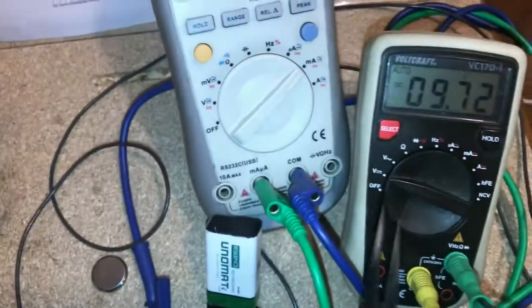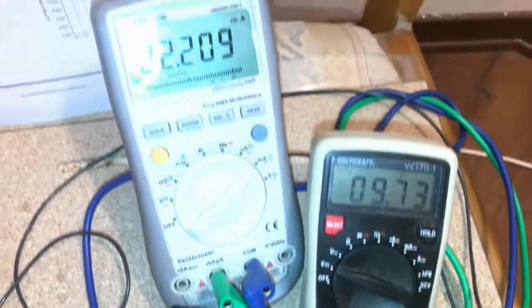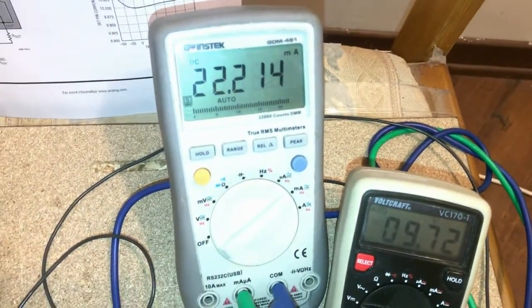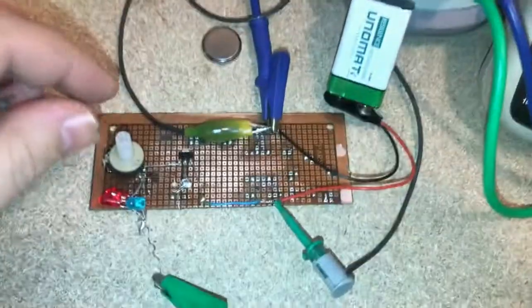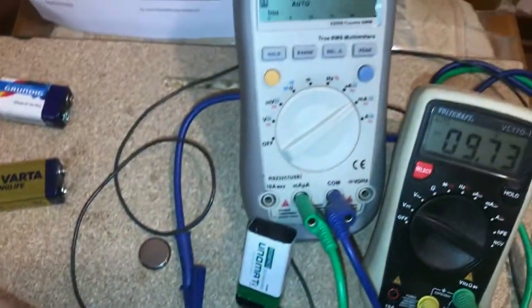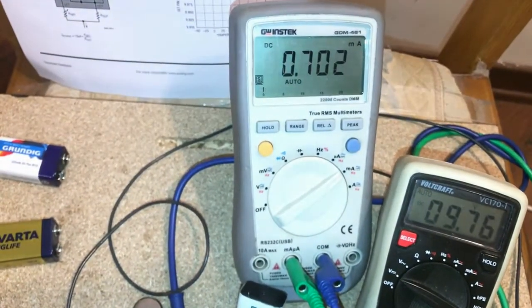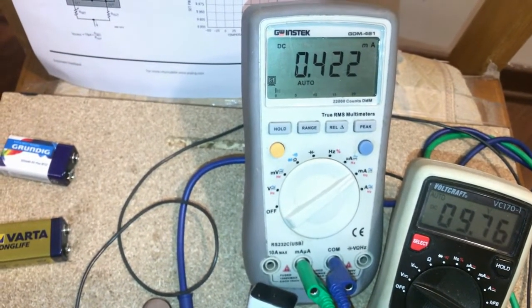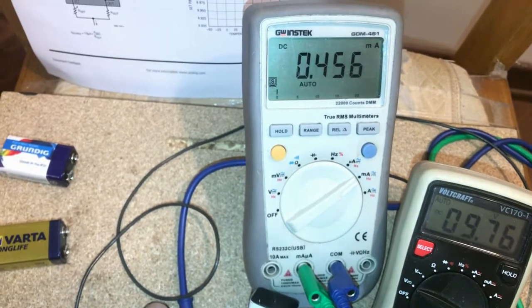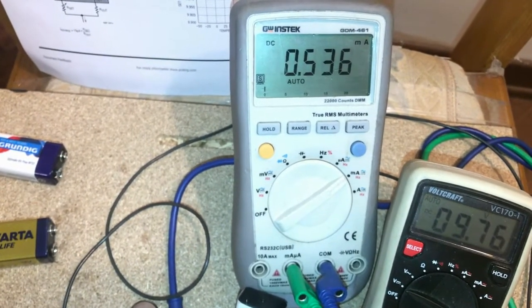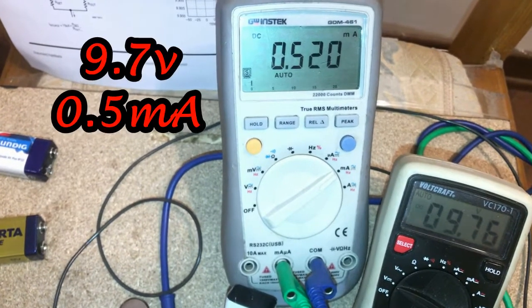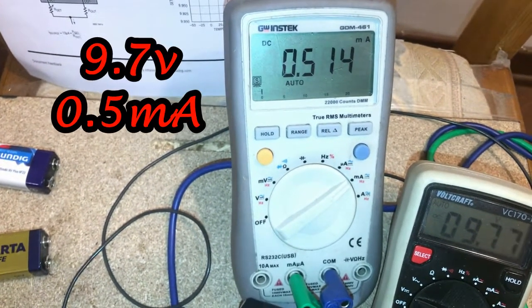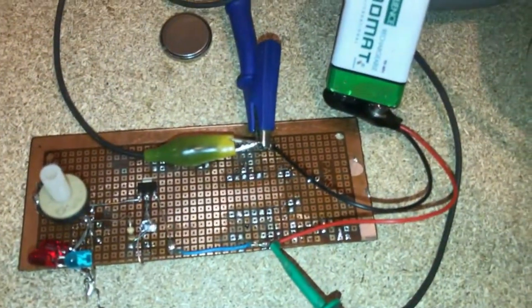And the battery is still 9 volts. Very good. I will set a smaller amount of current, for example maybe 500 microamps or something. 515. I'm going to change the battery one by one.